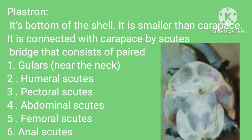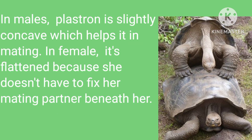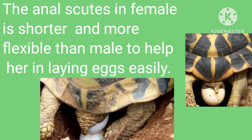Plastron: it is the bottom of the shell and is smaller than the carapace. It is connected with the carapace by a bridge that consists of paired scutes. The scutes of the plastron include: gulars, humeral scutes, pectoral scutes, abdominal scutes, femoral scutes, and anal scutes. Gulars are present near the neck. In males, the plastron is slightly concave, which helps in mating.